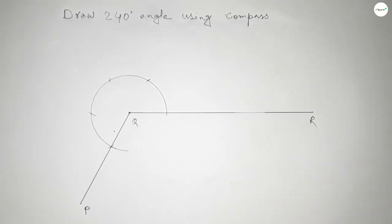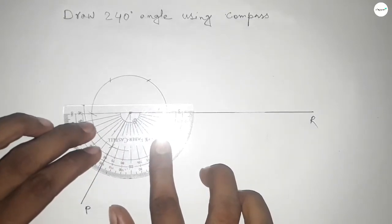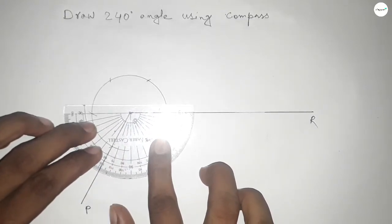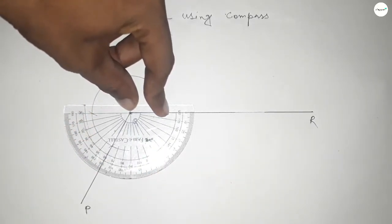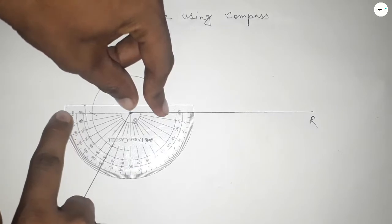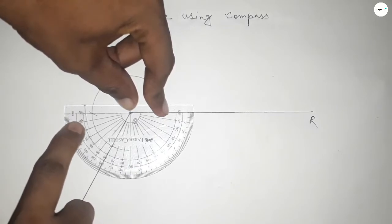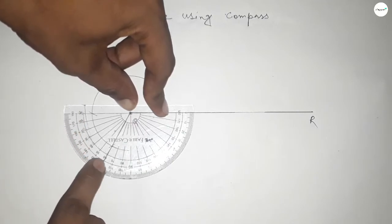Now I am going to check whether it is 240 or not. So now checking, this is 180 degrees up to here, and this is 10, 20, 30, 40, 50, 60. So by adding 60 degrees with 180...